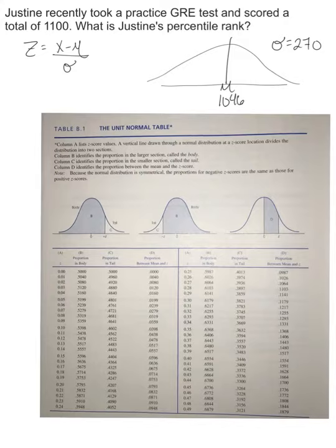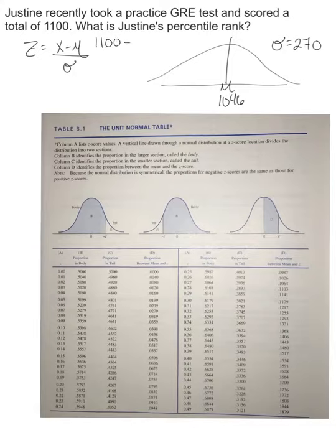We're trying to find what percentage of the population she beat — that's her percentile rank. The first thing we need is her Z score: Z equals X minus mu divided by standard deviation. For her: (1,100 minus 1,046) divided by 270, giving a Z score of 0.237.